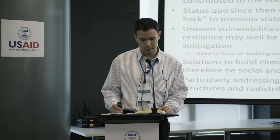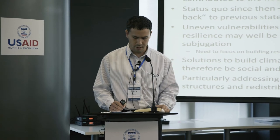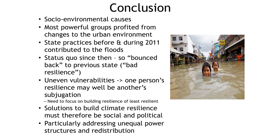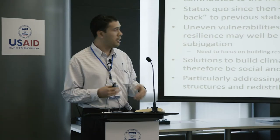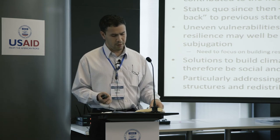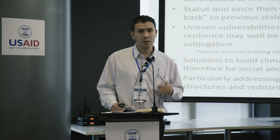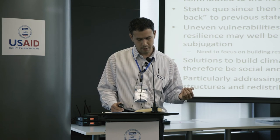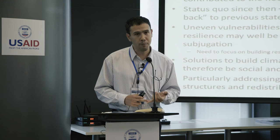To conclude: floods are caused by socio-environmental causes. The most powerful groups have profited from changes to the urban environment. State practices before and during 2011 contributed to the floods, and since then the status quo has basically been restored. If you talk about resilience and bouncing back, it has returned to the previous state — which some would argue is bad resilience — and has created new uneven vulnerabilities. One person's resilience might be another person's subjugation. We need to focus on building resilience of the least resilient: the urban poor, small and medium enterprises, and smallholder farmers.